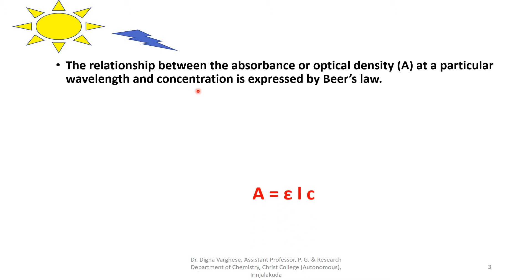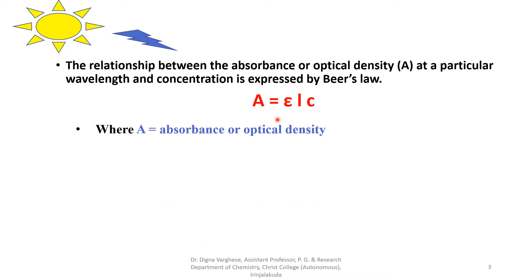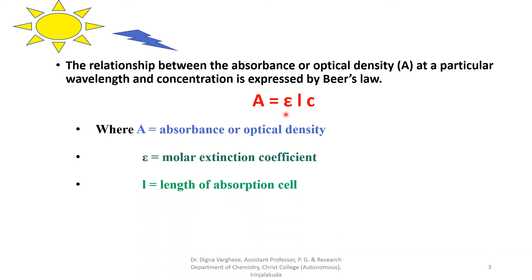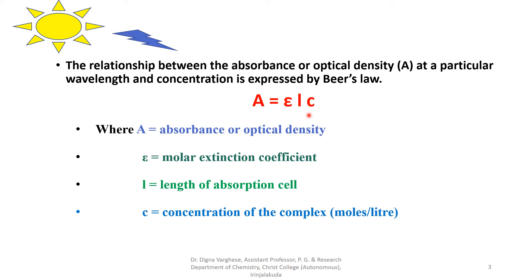Beer's law is explained by the equation A = εLC, where A is the absorbance or optical density, ε (epsilon) is the molar extinction coefficient, L is the length of the absorption cell, and C is the concentration of the complex expressed in moles per liter.